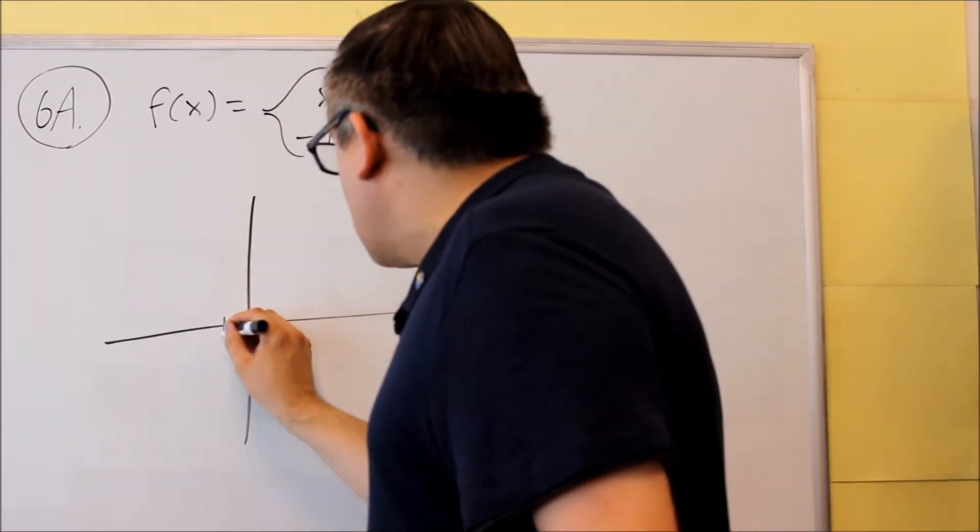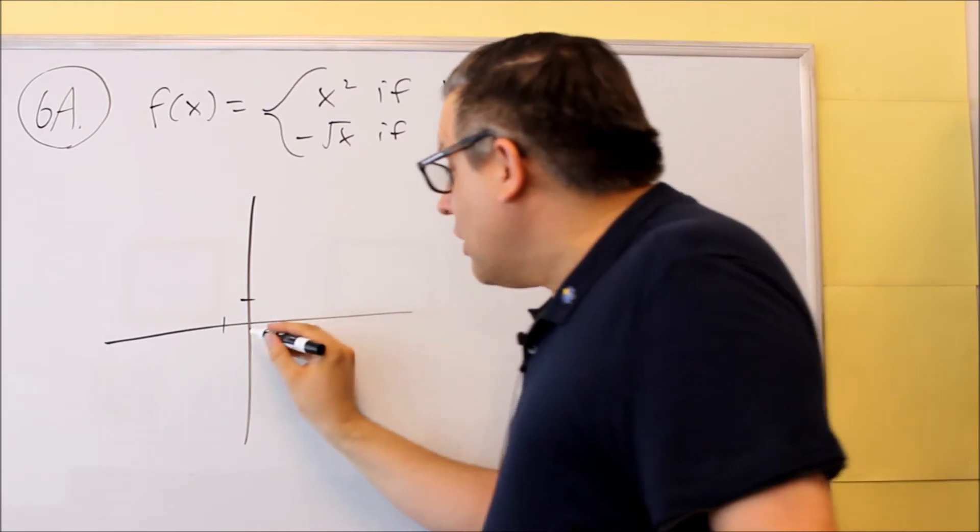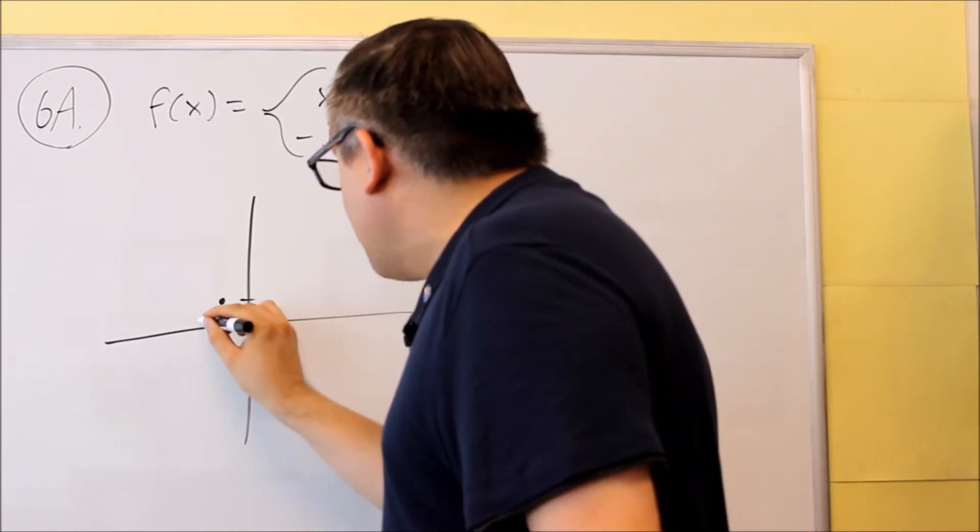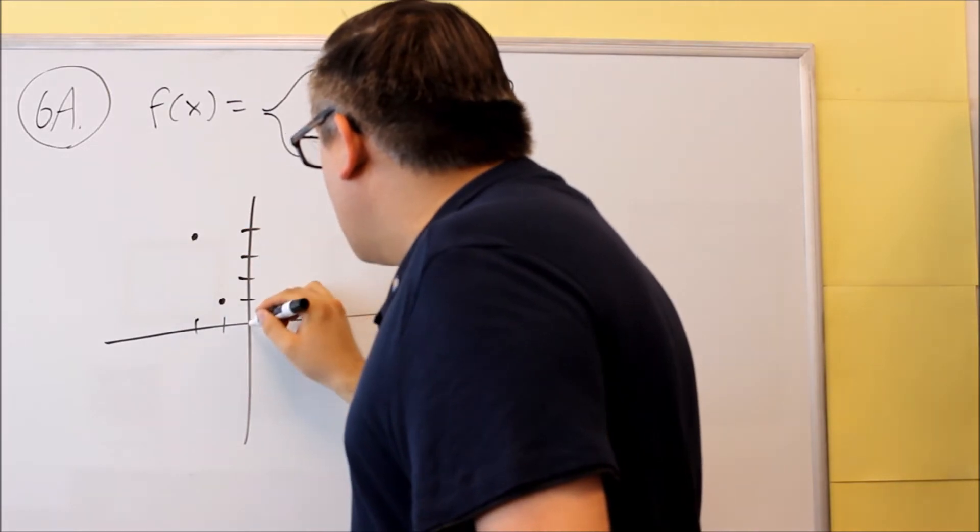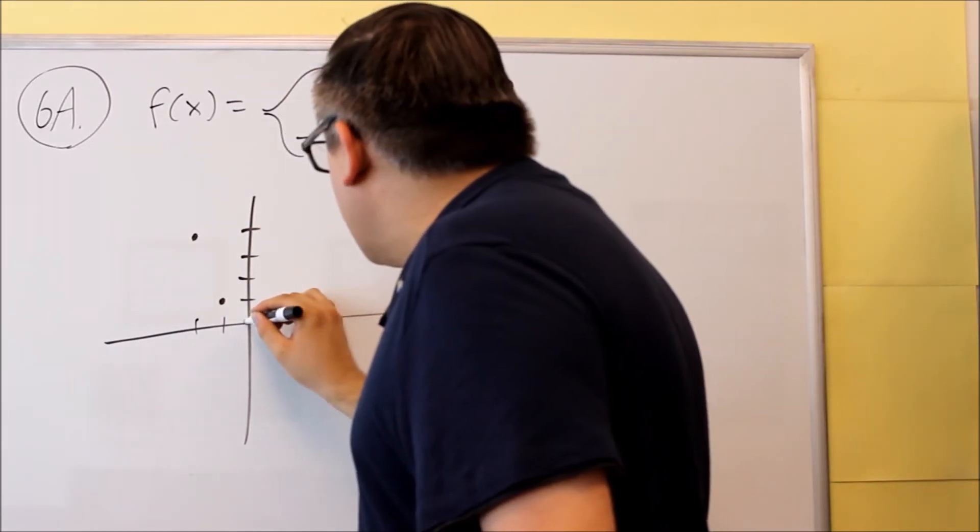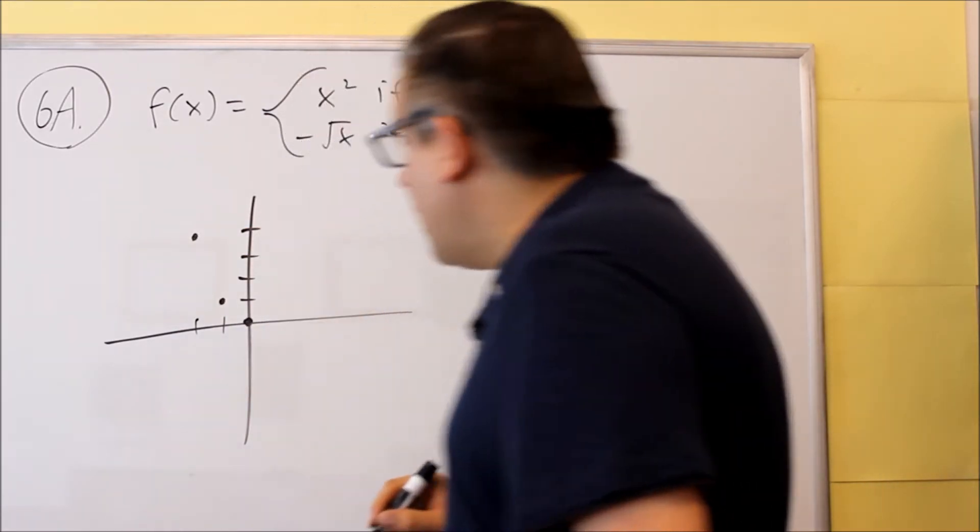So the key points would be, coming in from the left, would be negative 1, 1, and negative 2, 4. And then it goes through 0, 0, and it looks just like that.